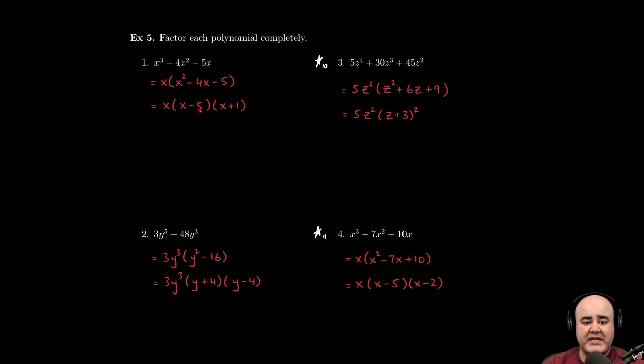Now if we factor this x squared minus 4x minus 5, we get x minus 5 times x plus 1. Remember to keep your GCF handy—this cannot vanish. A common mistake is that students just forget about the GCF. They think because it's factored out it's gone. That's not the case.